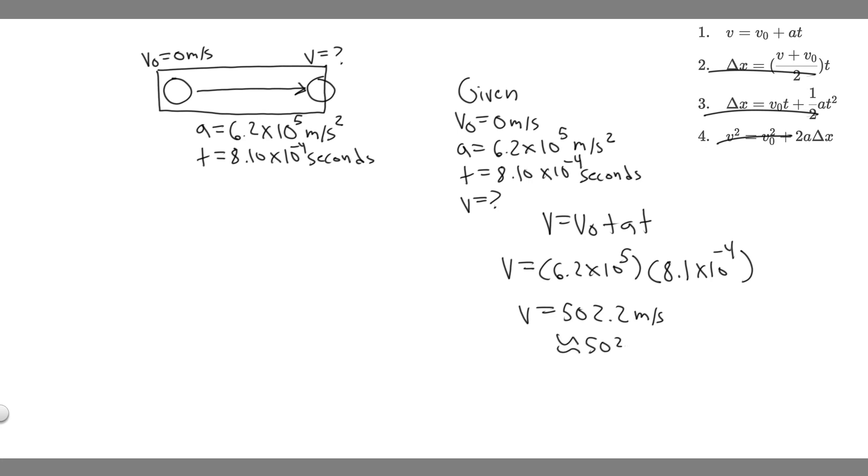Just make sure you do what your teacher wants you to do. But essentially, it's going to be 502.2 meters per second. That's going to be the velocity, the muzzle velocity. So this is your answer, and hopefully you found this useful.